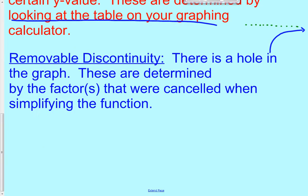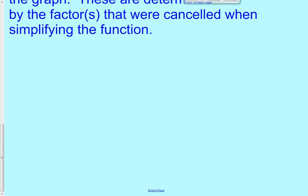Finally, we have removable discontinuities, more often called holes in the graph. Whenever I say a hole or a removable discontinuity, it's the exact same thing. These are determined by the factors that were cancelled when simplifying the function. So you might have a function that has a hole right here and then continues onward.